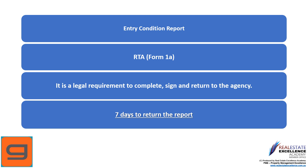The Form 1A is the entry condition report. It is a legal requirement for you to complete, sign, and return the Form 1A to our agency within seven days of taking possession. You are given a copy completed and signed by our agency on or before the day you take possession — usually the day you collect the keys. If you have any questions or concerns during this period, please contact our property manager and return the report within the seven days set out in the legislation.